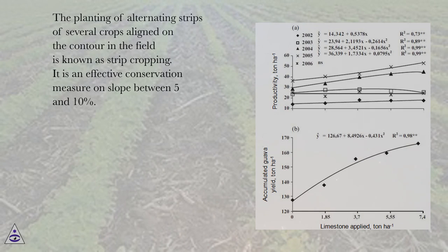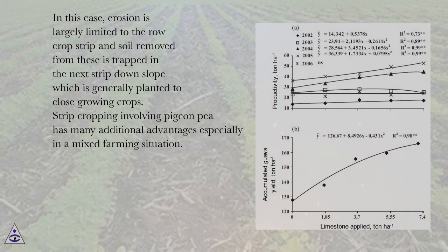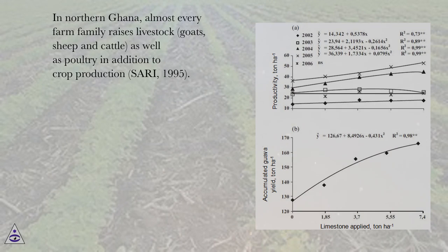The planting of alternating strips of several crops aligned on the contour in the field is known as strip cropping. It is an effective conservation measure on slopes between 5 and 10 percent. Erosion is largely limited to the row crop strip, and soil removed is trapped in the next strip downslope, which is generally planted to close-growing crops. Strip cropping involving pigeon pea has many additional advantages especially in a mixed farming situation. In northern Ghana, almost every farm family raises livestock — goats, sheep and cattle — as well as poultry in addition to crop production.